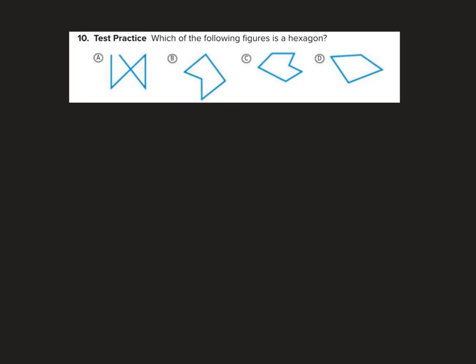So test practice, which one of these is a hexagon? We know this one's not, it's not closed. I can get in right here. Not closed. One, two, three, four, five sides. Not a hexagon, that's a pentagon. One, two, three, four, five, six sides. That one is a hexagon. And this one's quadrilateral. So we know that the answer is C. C is a hexagon because it has six sides.